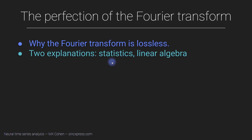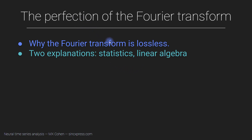I'm going to talk about this from a statistics perspective — this is a bit of an analogy — and also from a linear algebra perspective. These are really just different ways of looking at the same explanation. I hope that you have either a statistics background or a linear algebra background, so that at least one of these explanations, maybe even both of them, will help you understand why the Fourier transform is lossless.